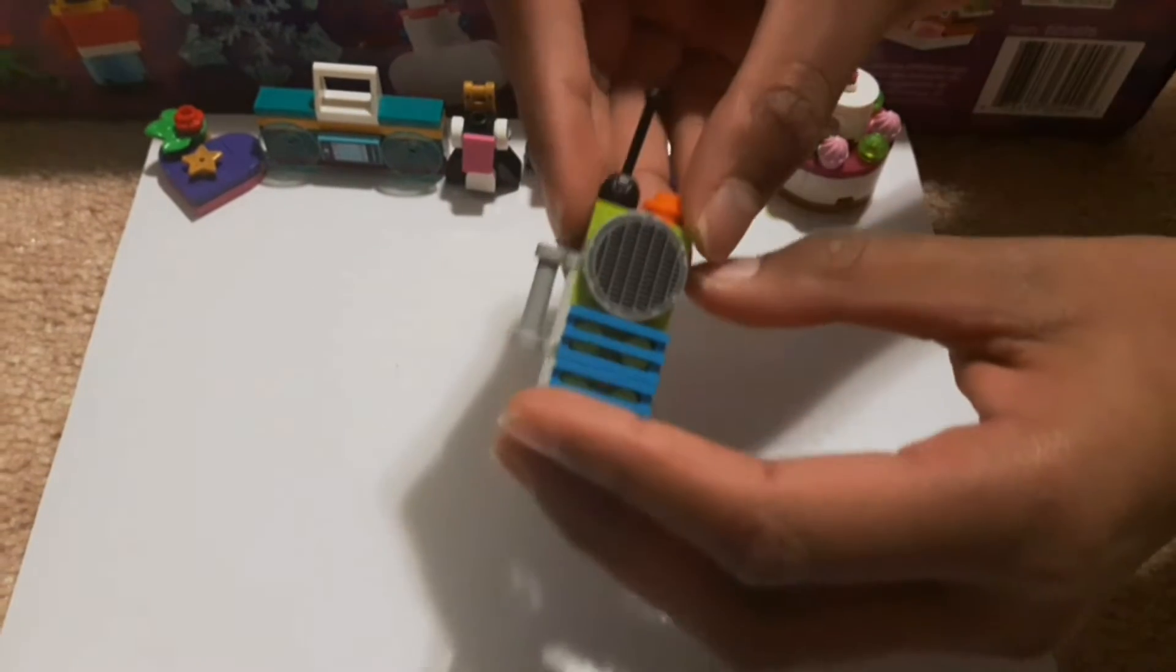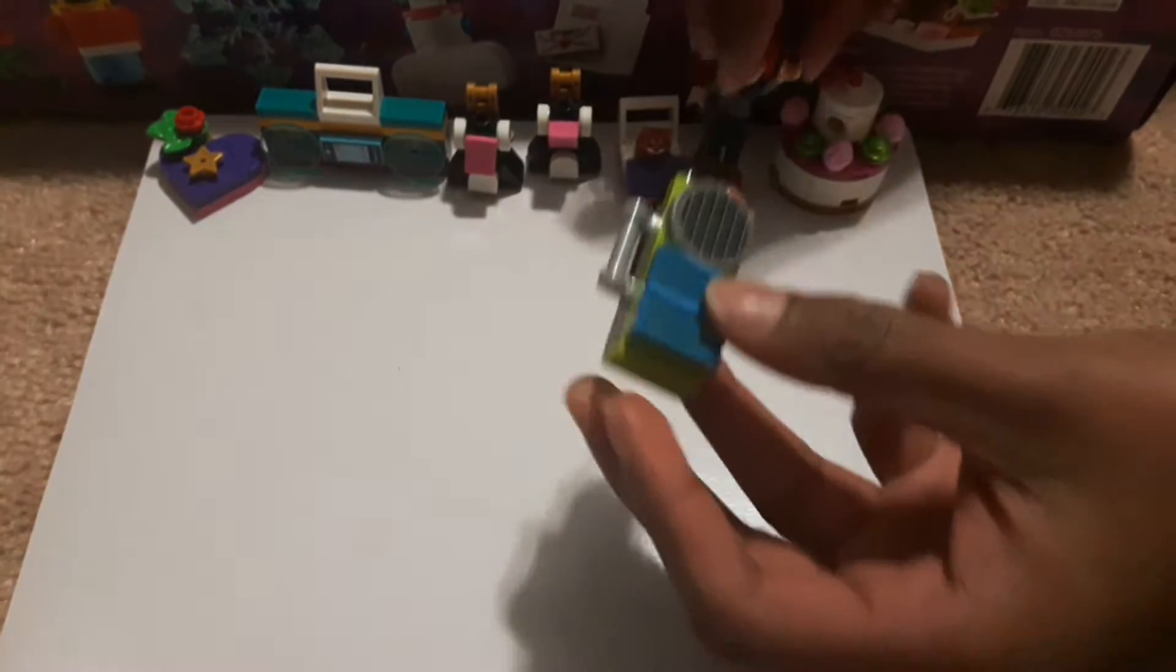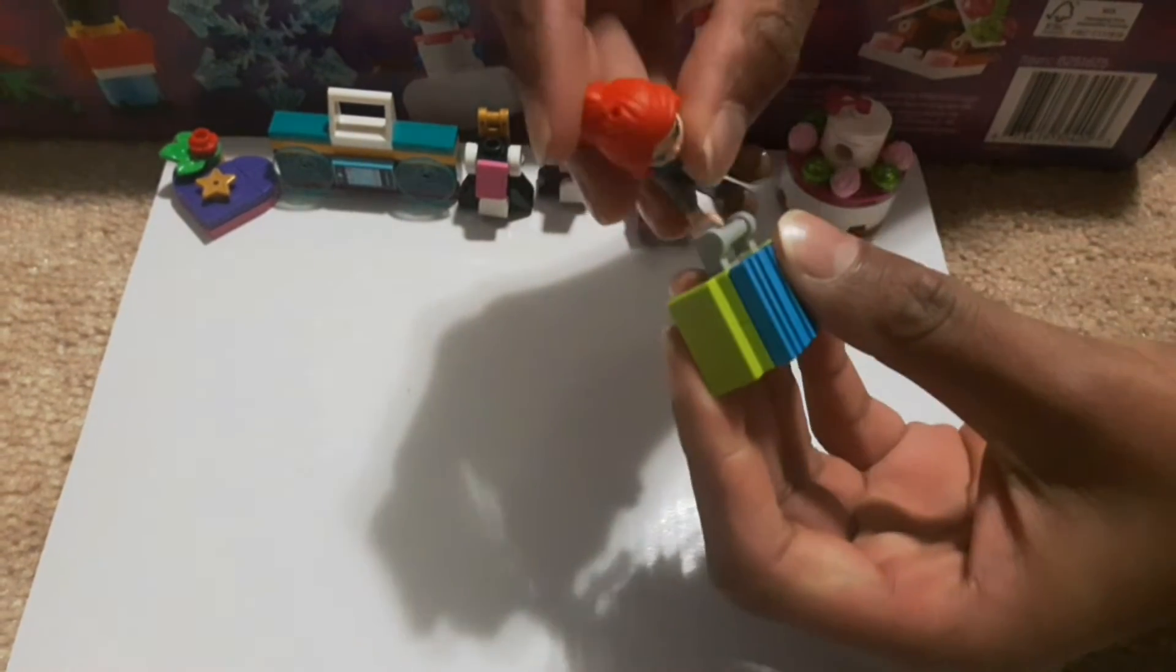So, here's the radio. It looks like a character can hold it. Let's see. Mia can hold it. Well, kind of. Wait, that's upside down. There we go. Yeah, it's really big for her.